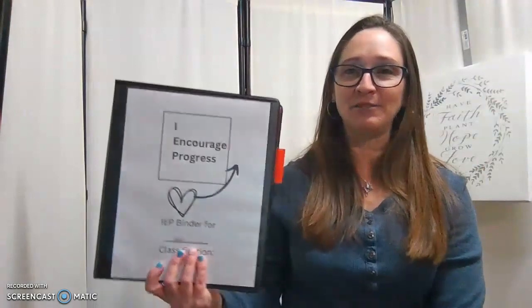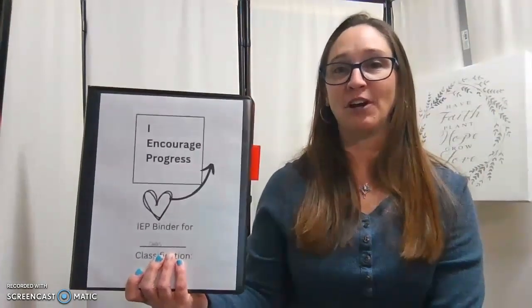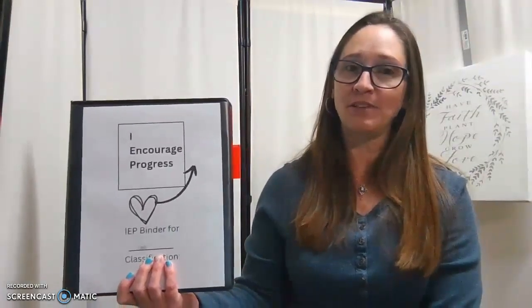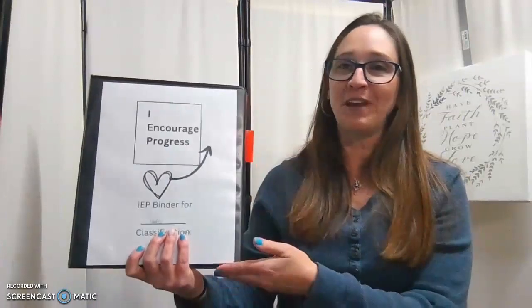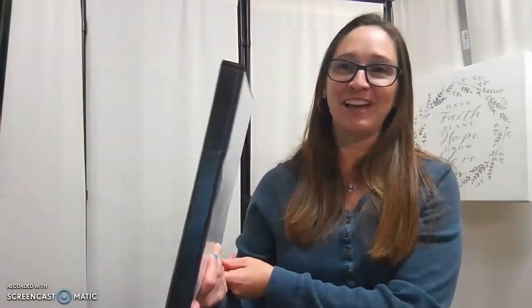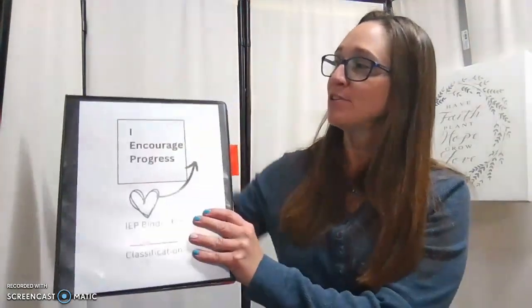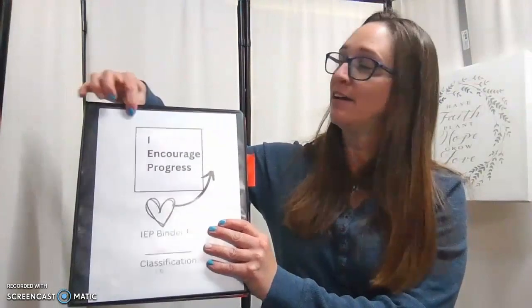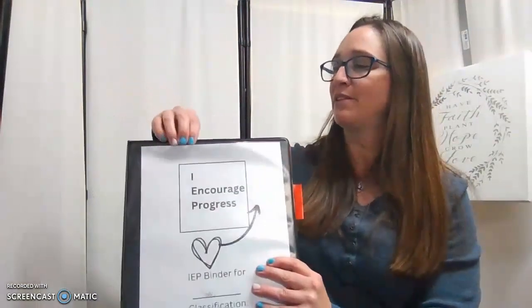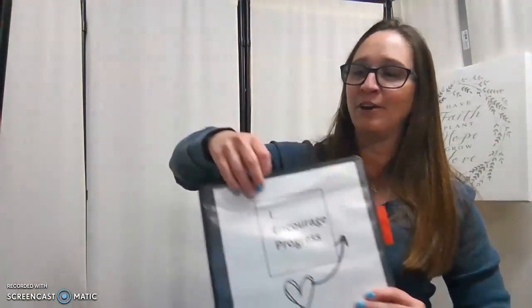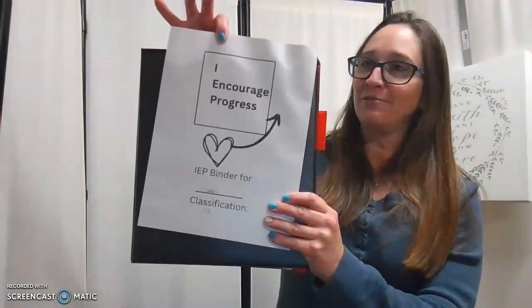First of all, you're going to need a three-ring binder. I personally recommend two inches or larger depending on how long your child has been receiving services. I'm showing you my youngest son's binder, and you can see I didn't start off with a bigger binder, and I'm already needing to upgrade to a larger one. I personally like this plastic on the outside cover, and that way I can slip this cover sheet in, and I know exactly whose binder it is.